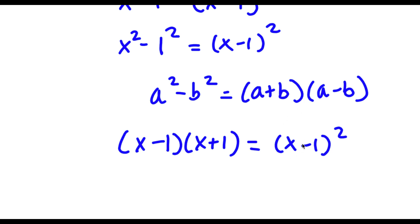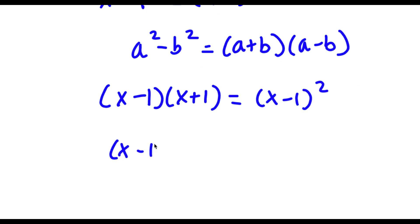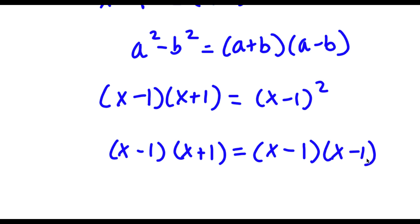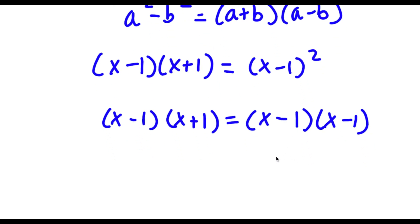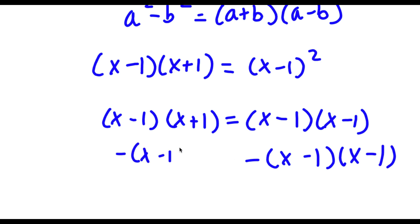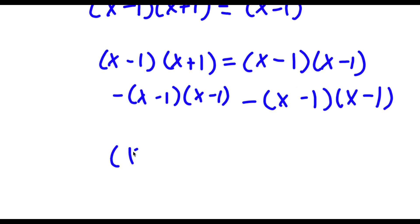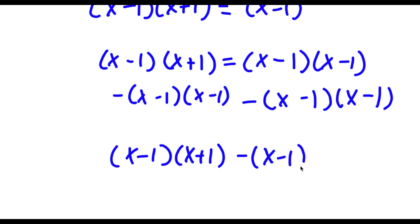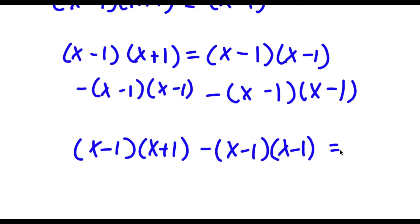Now x minus 1 squared is the same thing as x minus 1 times x minus 1, because it's just x minus 1 twice. So now if I subtract both sides by x minus 1 times x minus 1, I get x minus 1 times x plus 1 minus x minus 1 times x minus 1 is equal to 0.